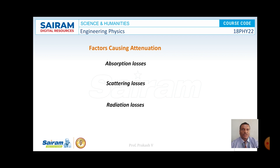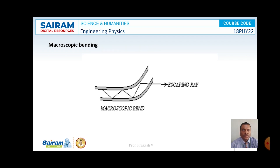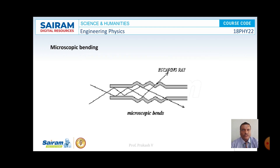These are all three types of losses observed. In the case of radiation loss, we encounter both microscopic bending and macroscopic bending — these two are the cases of radiation loss.